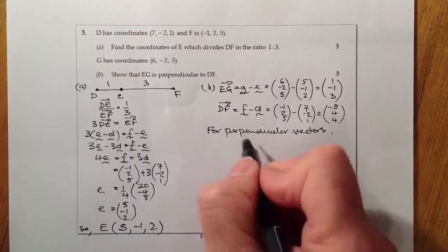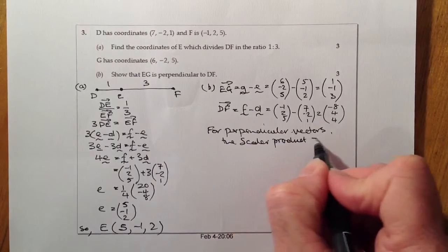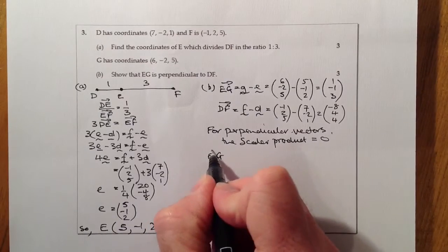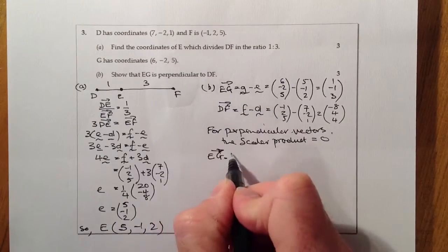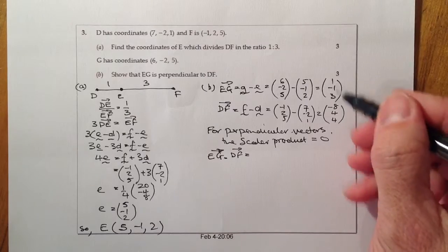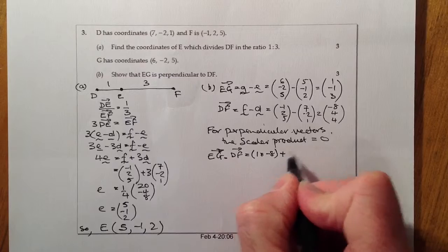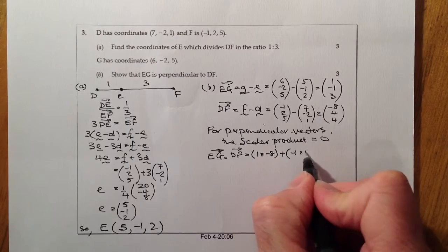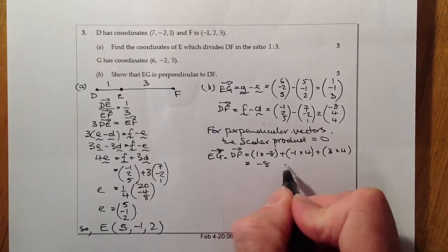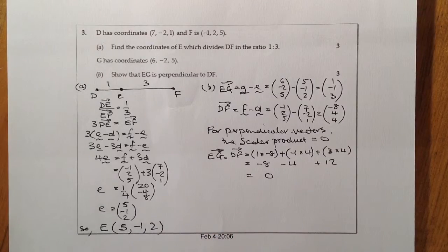Remember, for perpendicular vectors I'd expect the scalar product equals zero. Let's do the scalar product: EG dot DF. Using the components: 1 times -8 plus -1 times 4 plus 3 times 4. This gives -8, -4, and +12, which equals zero.